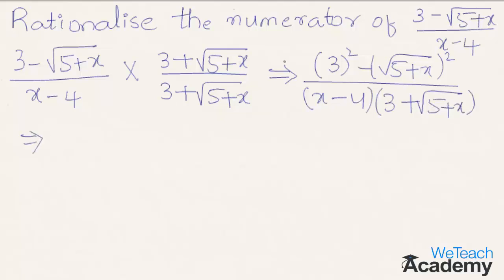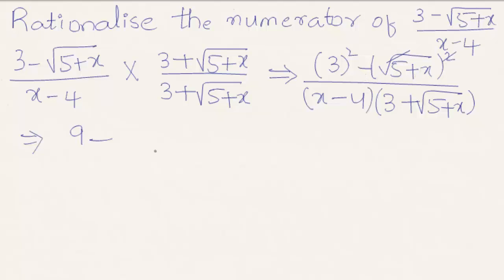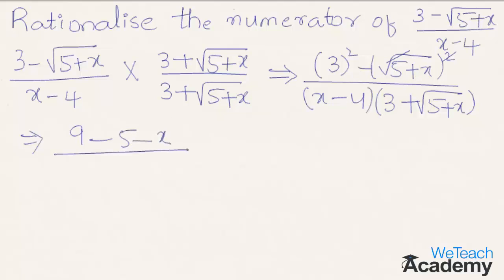That implies we get here 3 squared is nothing but 9, minus — by cancelling the square and square root we get minus 5 plus x, which equals minus 5 minus x, divided by x minus 4 into 3 plus under root 5 plus x.